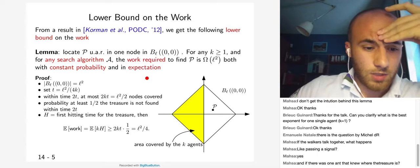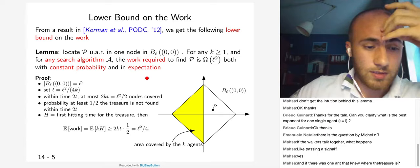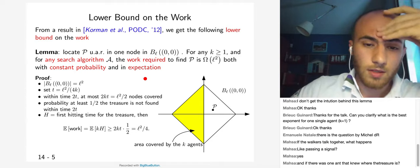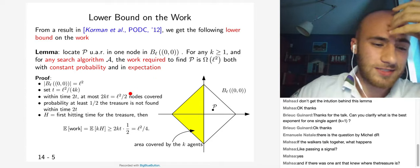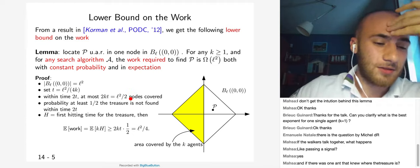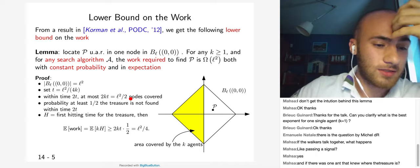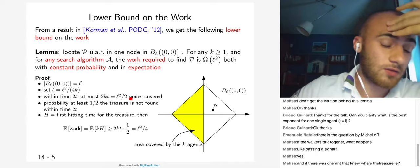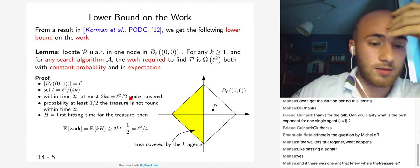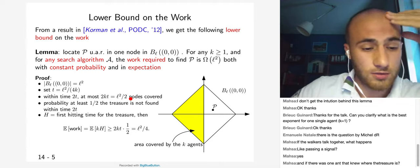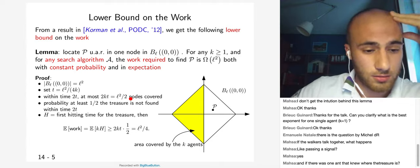Q: What if one agent already knows the treasure location? A: Then the problem is very different — it depends on what that agent can do, for example whether it can communicate the location to the others.